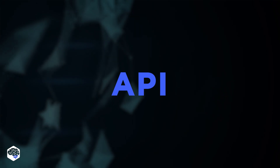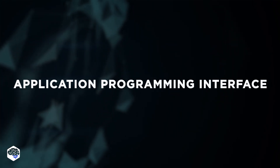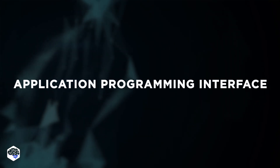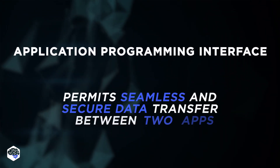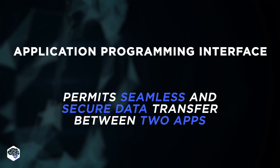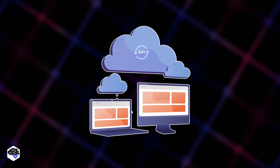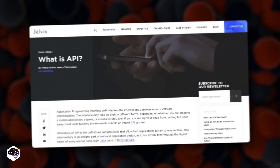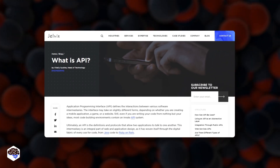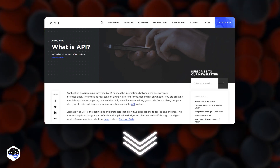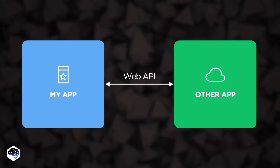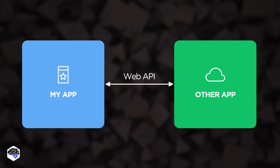What is an API? APIs, which stand for Application Programming Interfaces, make the software development process easy by permitting a seamless and secure data transfer between two apps. It also helps to improve the exchange of functionality between two applications. APIs allow two applications to talk to each other, relaying data from one end to another.